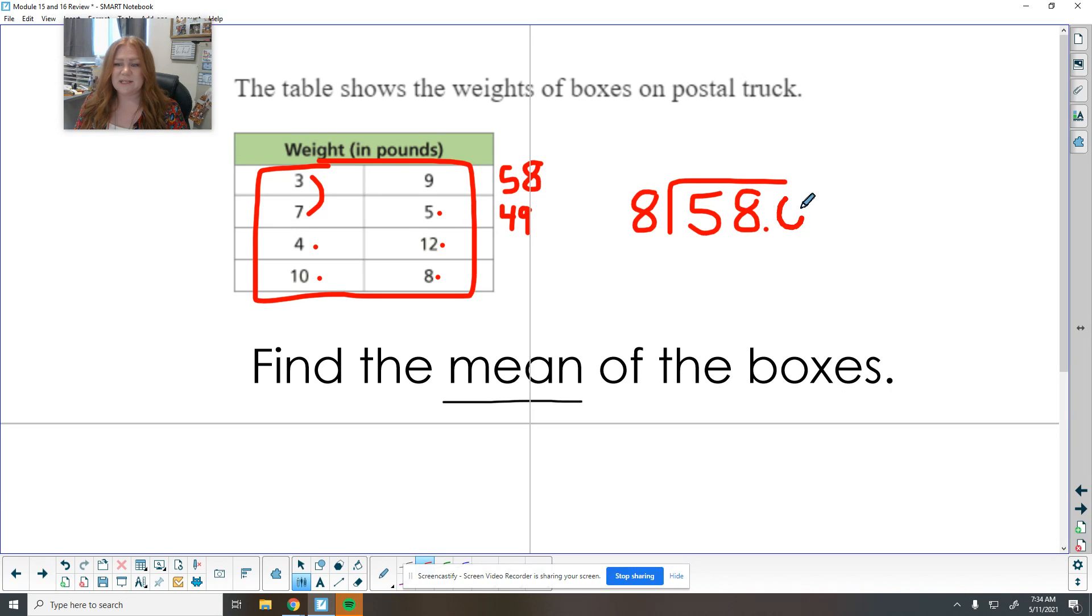I know that eight doesn't go into 58 evenly. So I'm just going to go ahead and add that decimal to get started. So it goes in there seven times is 56. There's two left over. It goes in there two times is 16, four left over, bring down another zero and five. So if they evenly distributed the boxes and rearranged them, they would each have 7.25 or seven and a quarter pounds in them.